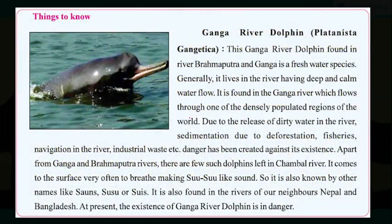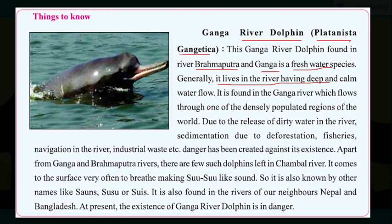Here is a very beautiful and human-friendly animal — the Ganga river dolphin, also called Platanista gangetica. This dolphin is mostly found in the rivers Brahmaputra and Ganga. It is a freshwater species that generally lives in deep and calm water flow. It is found in the Ganga river which flows through one of the most densely populated regions of the world.